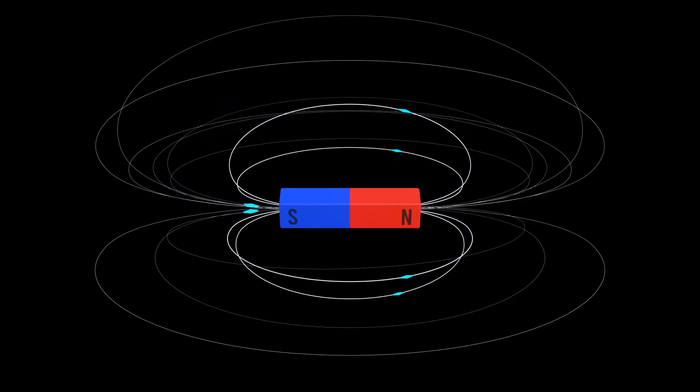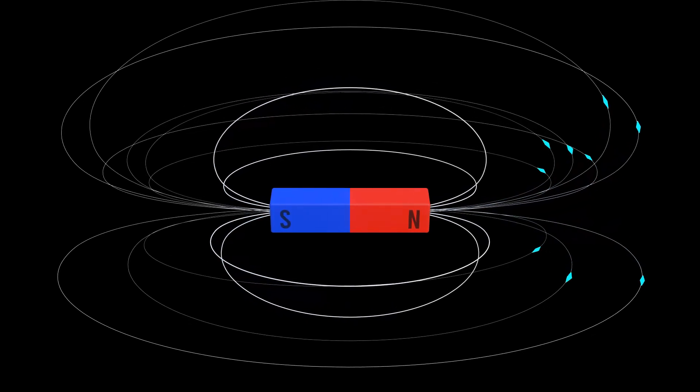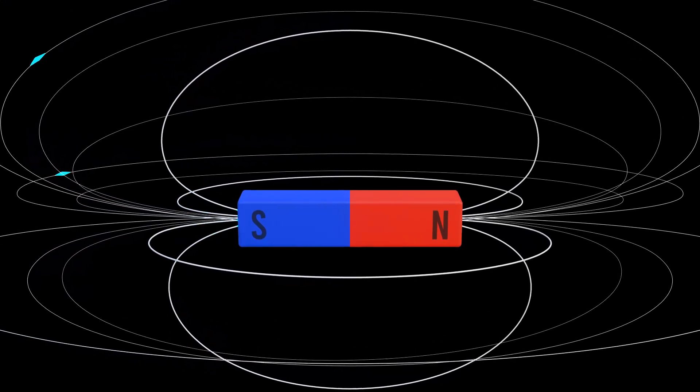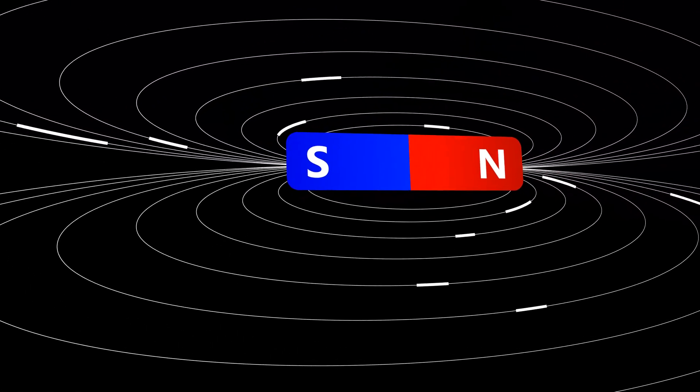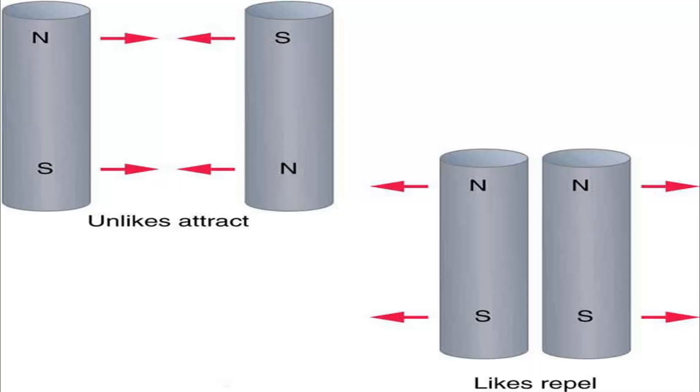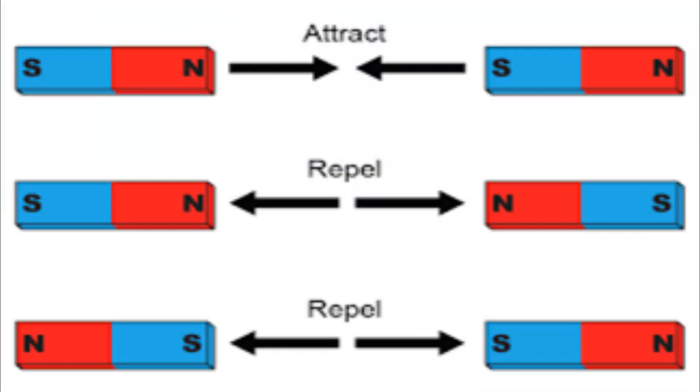Every magnet has two poles: a north pole and a south pole. The magnetic field lines always go from the north pole to the south pole. If you cut a magnet in half, each piece will have a north and a south pole, no matter how many times you cut it. When you bring two magnets close together, the way they behave depends on how their poles are facing. Like poles repel: if you bring two north poles or two south poles together, they will push each other away. Opposite poles attract: if you bring a north pole and a south pole together, they will pull toward each other.